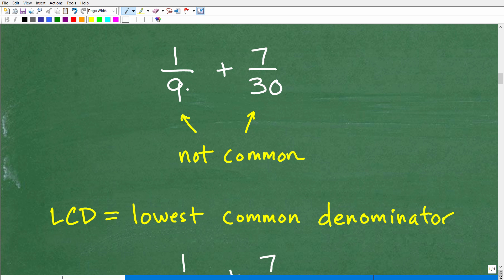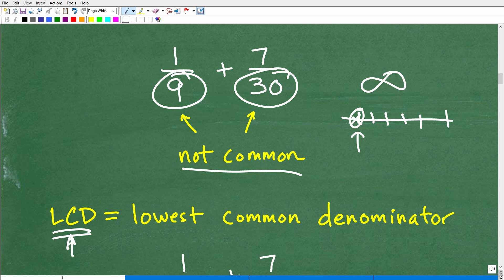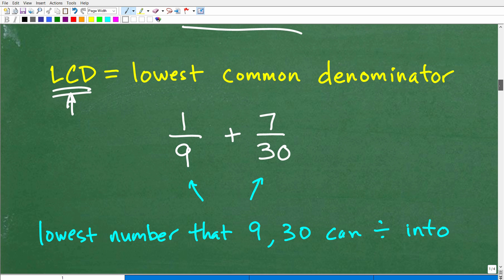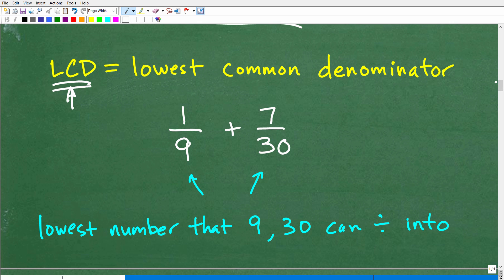We have 1 ninth plus 7 thirtieths. These two denominators are not common. We have a little situation. But don't worry. What we're going to do is find the lowest common denominator. Any two numbers, there's always going to be numbers they have in common. 9 and 30 have infinitely many denominators in common. But we don't want all the denominators. What we want is the lowest common denominator.